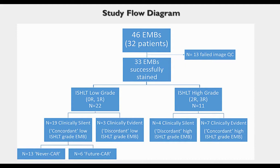The study flow diagram briefly outlines the cohort. Of the slides passing QC, 22 were low-grade and 11 were high-grade biopsies. From the perspective of patient-level rejection syndrome, 23 were associated with clinically silent rejection, whereas 10 were associated with clinically evident rejection events. The cohort contains seven examples of overt clinical histologic discordance where either low grades were associated with serious rejection or high grades were associated with completely benign clinical courses. Of the 19 clinically silent low-grade cases, these were broken into patients who would go on to have a serious rejection event within the next six to nine months versus patients who never developed a rejection event within the first three years — 13 never-rejection patients and six future-rejection patients.